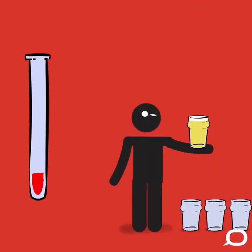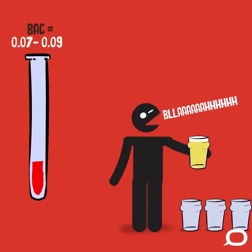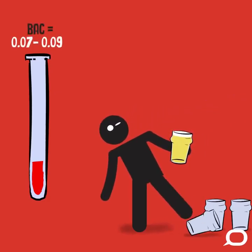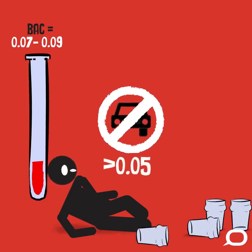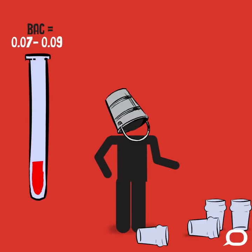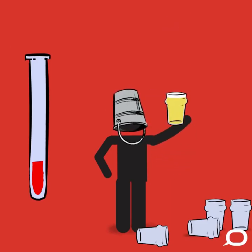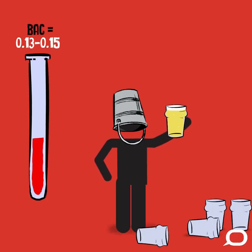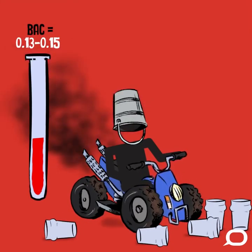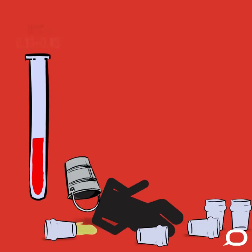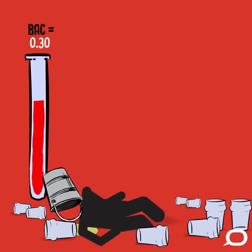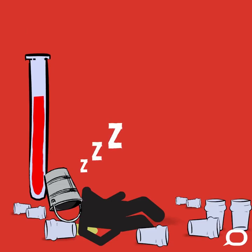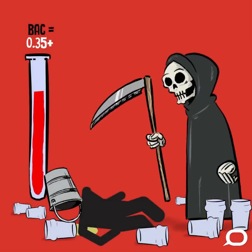At a BAC of 0.07 to 0.09, your speech will start to slur and you won't be as balanced when you move. There'll also be a decrease in reaction time and coordination — hence the legal driving limit of 0.05 in Australia. Your hearing and vision will also be impaired, and it's pretty much just downhill from here. At a BAC of 0.13 to 0.15, you'll have significant loss of coordination and balance, blurred vision, and severely impaired judgment. Most people will start to feel nauseous and may vomit if their BAC gets too close to 0.2. At a BAC of around 0.3, you'll be in a state of near unconsciousness if not unconscious already. Coma is possible at 0.35 and above, and death is just around the corner.